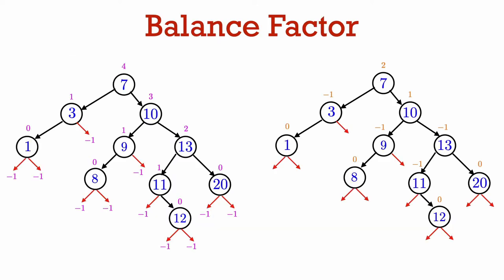Here's the example tree we had before. The heights of nodes are written in pink on the left, and the balance factor of nodes is written in orange on the right. For example, look at the node with key 13. The height of its right child is zero — its right child is a leaf — and the height of its left child is one. Therefore, the balance factor of the node with key 13 is zero minus one, or minus one.